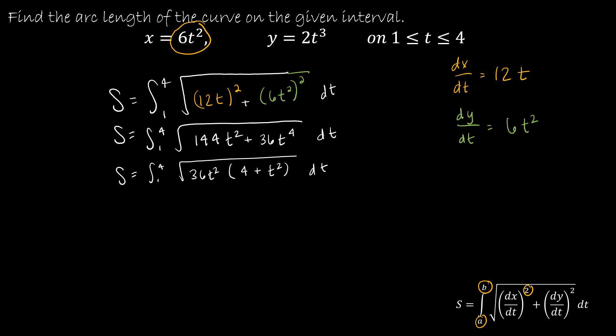Now the reason that's important is because 36t², we can take the square root of that. So we can actually go ahead and get that out of our square root. So that's going to be 6t, and then what's left over is the square root. And I'm just going to write it as t² + 4.